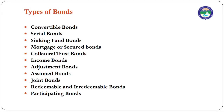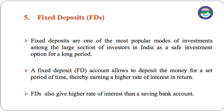The different types of bonds include: convertible bonds, serial bonds, sinking fund bonds, mortgage or secured bonds, collateral trust bonds, income bonds, adjustment bonds, assumed bonds, joint bonds, redeemable and irredeemable bonds, and participating bonds. These are issued by both public and private sector companies.